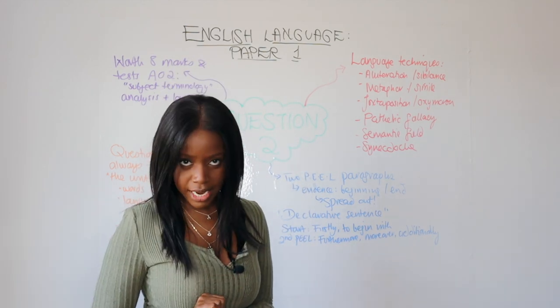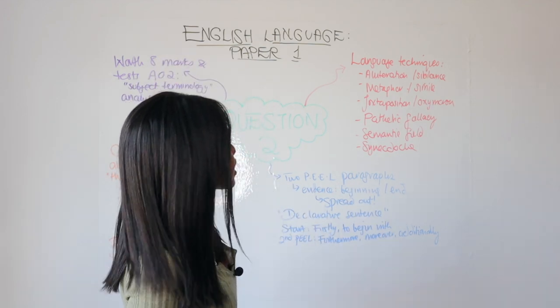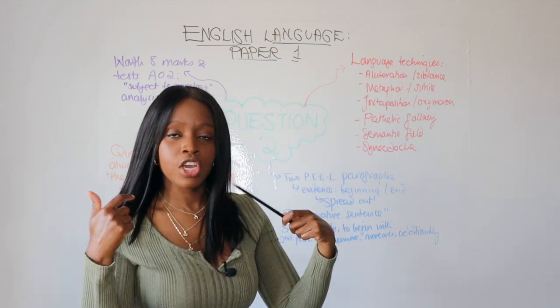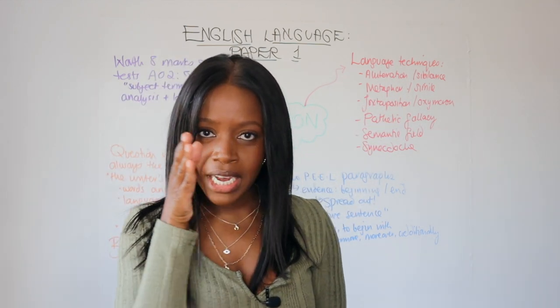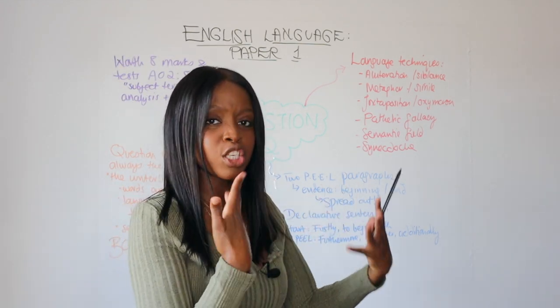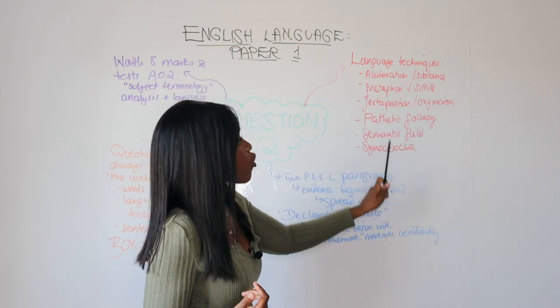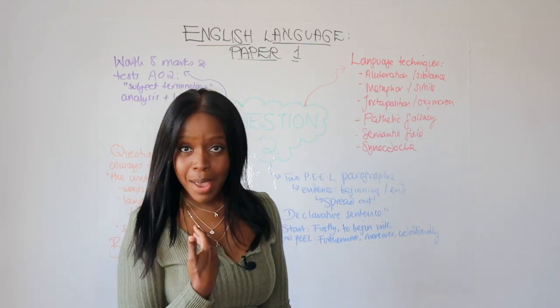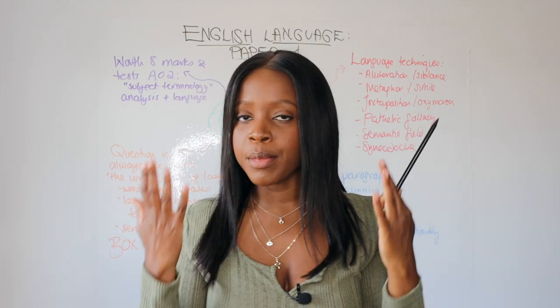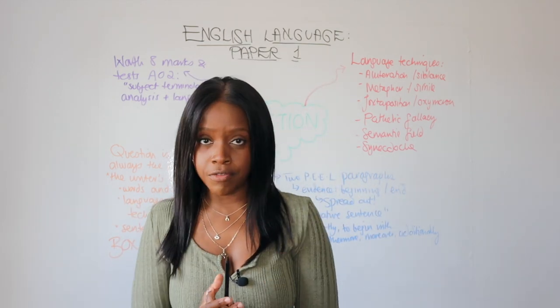Fourth and final step to getting full marks and to doing really well on this part of the paper is make sure you are aware of some really good language techniques that you can look for and really beeline for when you're reading the extract. Here are some really good language techniques you can just memorize and then just make sure you're always looking for them: Alliteration, sibilance, metaphor, simile, juxtaposition, oxymoron, pathetic fallacy, my personal favorite which is semantic field, and a really good grade nine technique called synecdoche. Commit those to memory, look for them in the language paper two question and you will be absolutely fine.